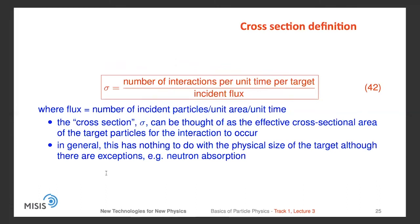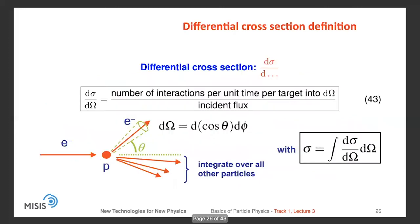With this we've finished with the two-body decay rate and now switch to the cross-section computation. The cross-section σ is defined as the number of interactions per unit time per target divided by the incident flux, where flux is the number of incident particles per unit area per unit time. The cross-section σ can be thought of as the effective cross-sectional area of the target particle for the interaction to occur. In general this has nothing to do with the physical size of the target, though there can be exceptions like neutron absorption. It's also often useful to think about the differential cross-section dσ/dΩ — the number of interactions going into a small angle dΩ divided by the incident flux.